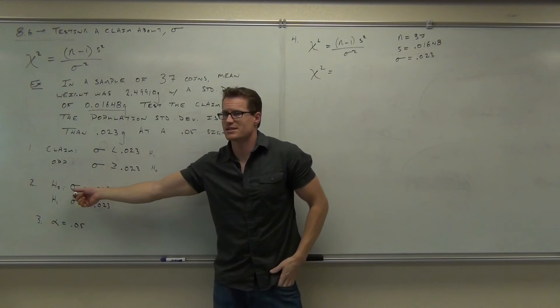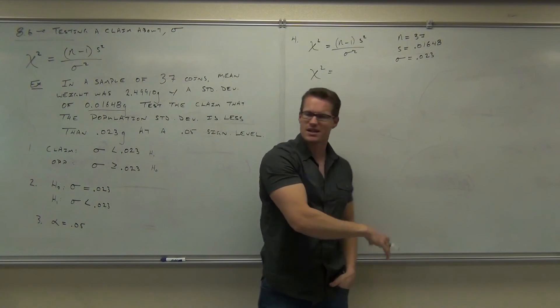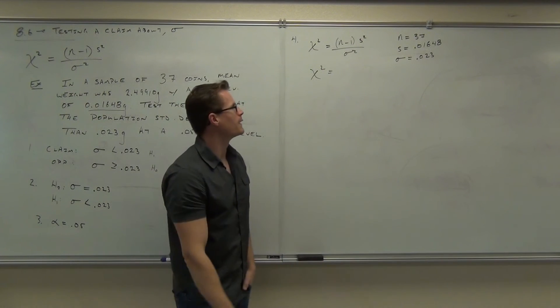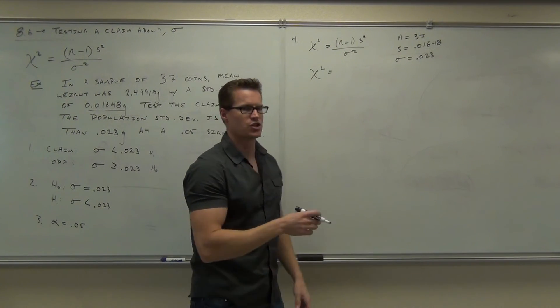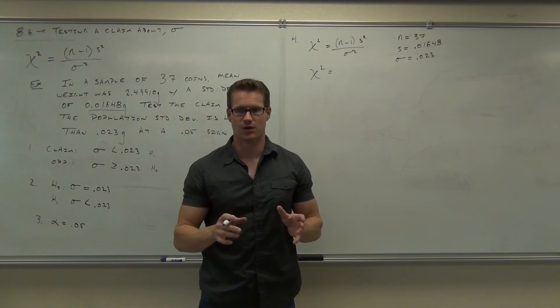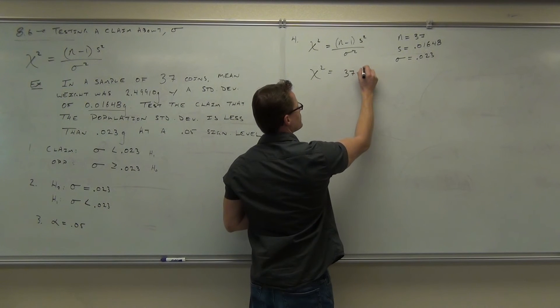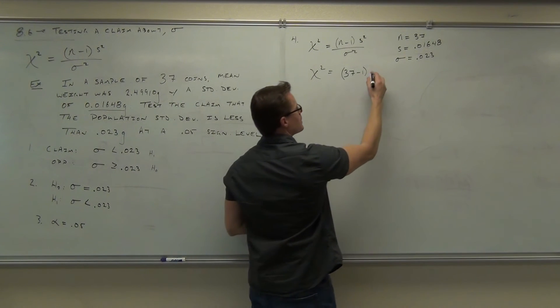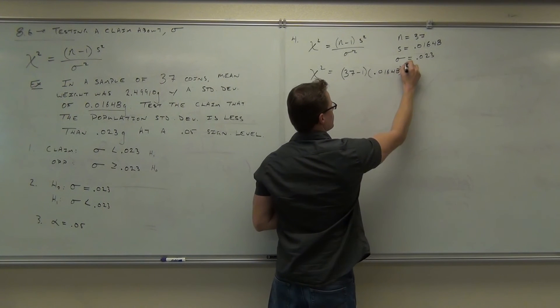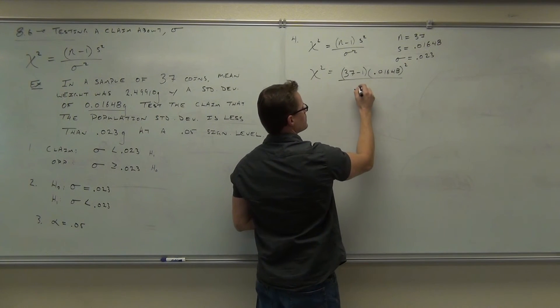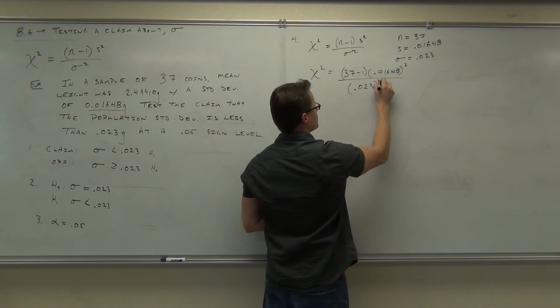Now can you take these numbers and apply them to this formula? Just don't forget to square stuff. Don't forget to square stuff. So we have n minus 1. That's 37 minus 1, or you should put 36. We got 0.01648 squared. We got 0.023 squared.